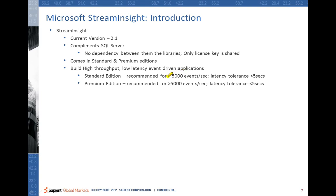Looking at what kind of event processing Stream Insight can provide: the standard edition is recommended for less than 5,000 events per second with a latency tolerance of more than 5 seconds. The premium edition goes much farther — it can handle more than 5,000 events per second with a latency tolerance of less than 5 seconds, so we're looking at near real-time processing.